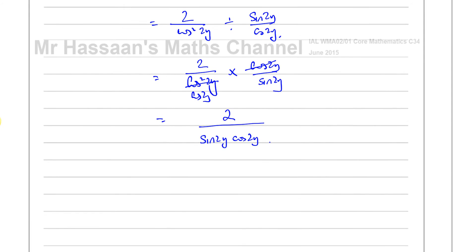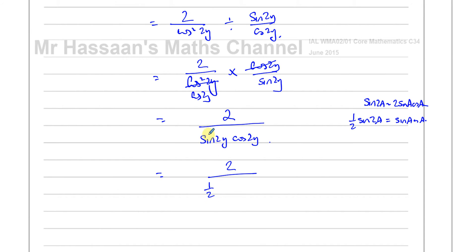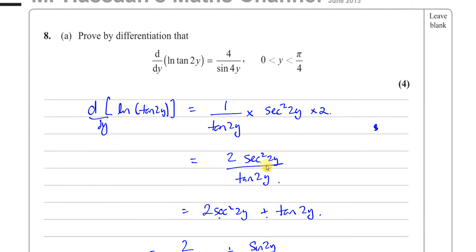Now we can use the double angle formula: sin(2a) = 2·sin(a)·cos(a), so sin(a)·cos(a) = ½·sin(2a). Here, that means sin(2y)·cos(2y) = ½·sin(4y). So we have 2 over ½·sin(4y), and 2 divided by ½ gives 4, leaving us with 4 over sin(4y).